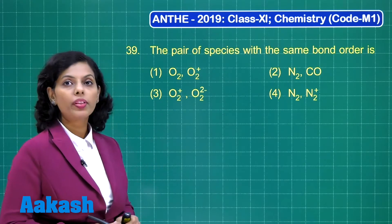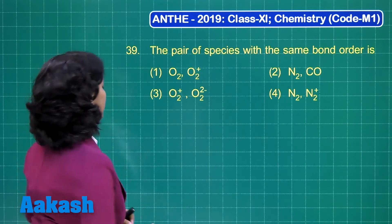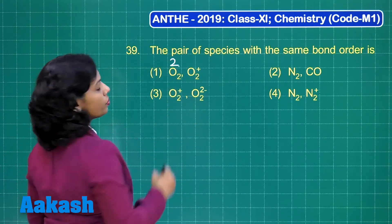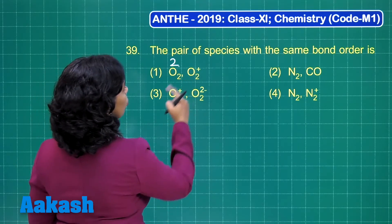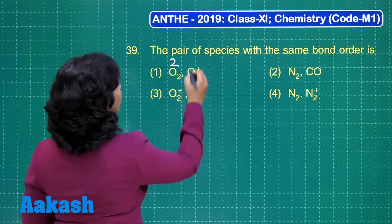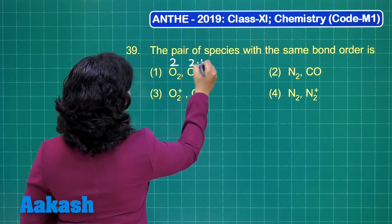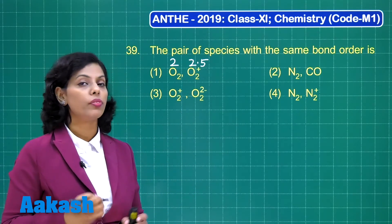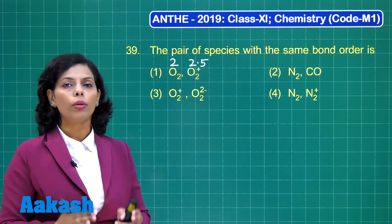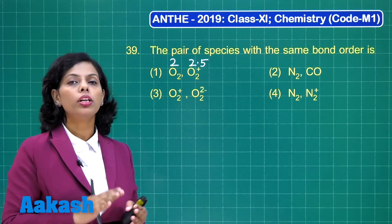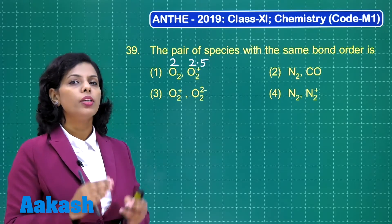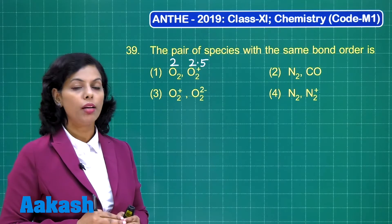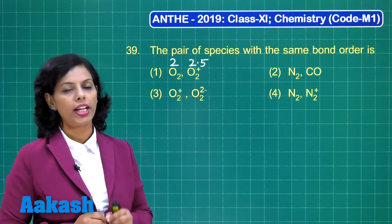If I talk about O₂, the bond order is 2. Now if I talk about O₂⁺, the bond order gets changed and it becomes 2.5. How would you find out this bond order? It can be calculated with the help of molecular orbital theory. Bond order is equal to half of (bonding electrons minus anti-bonding electrons) — that is the formula.